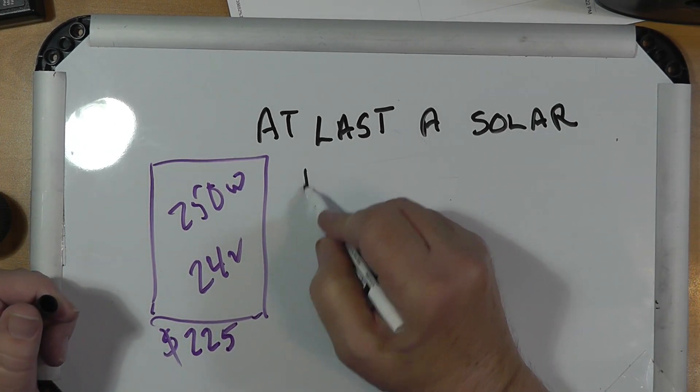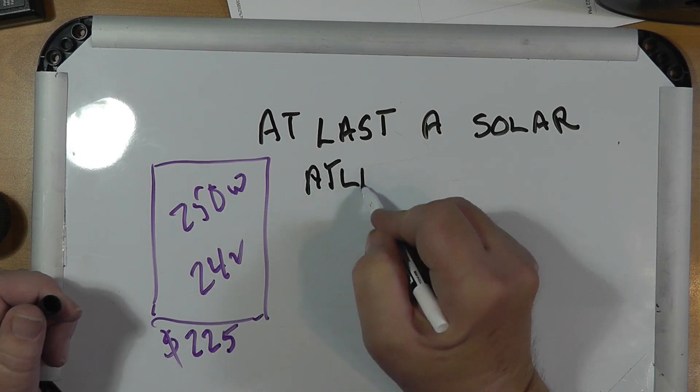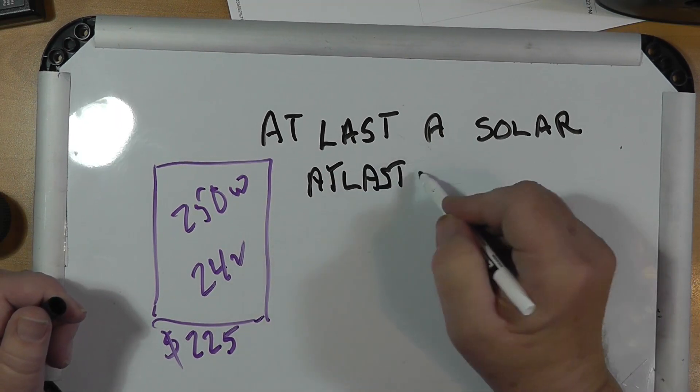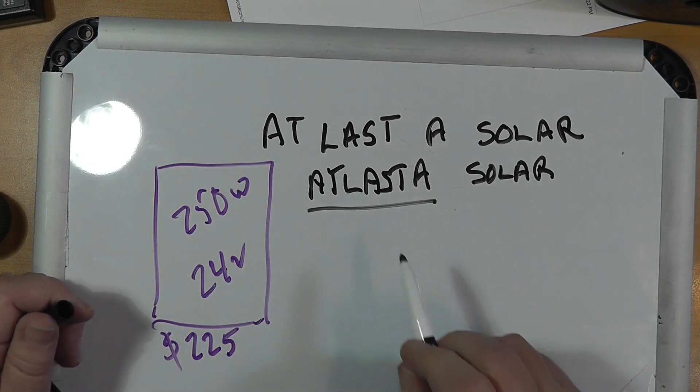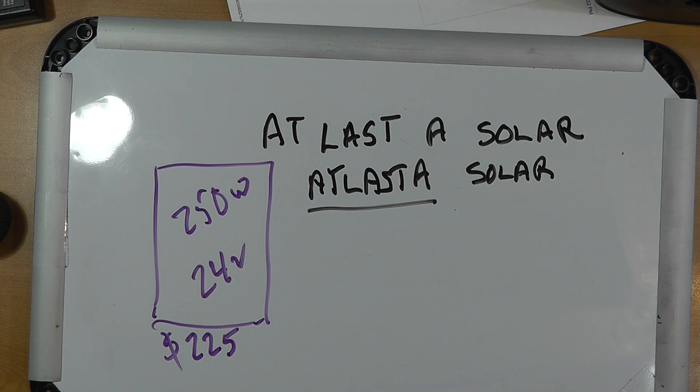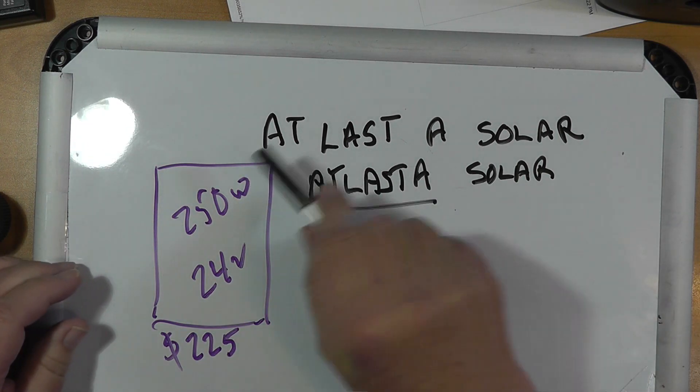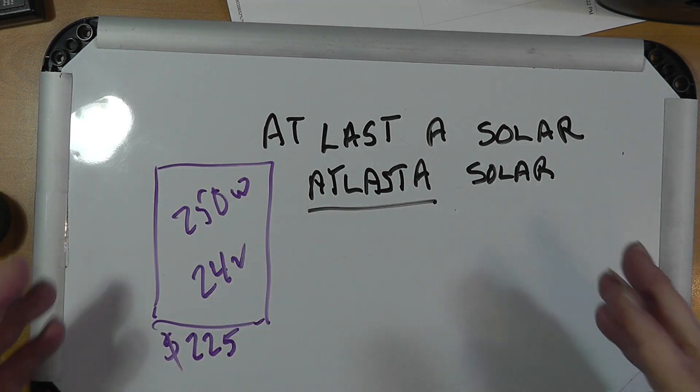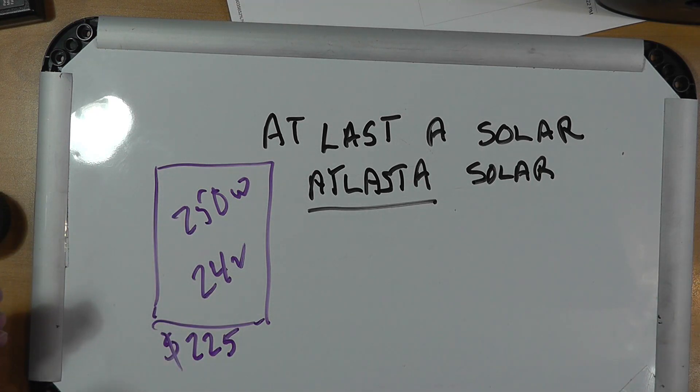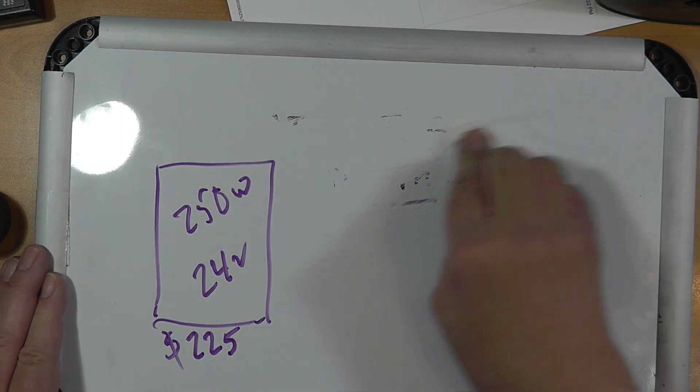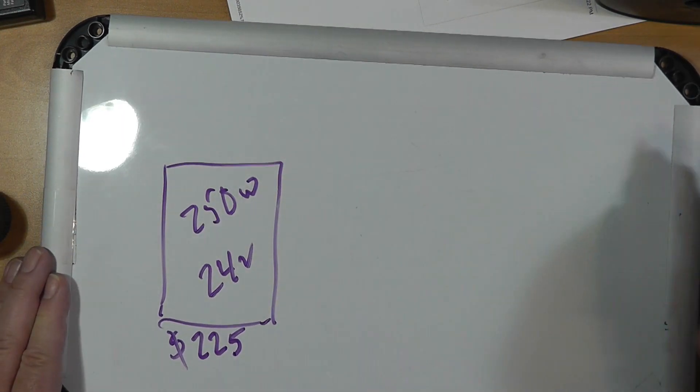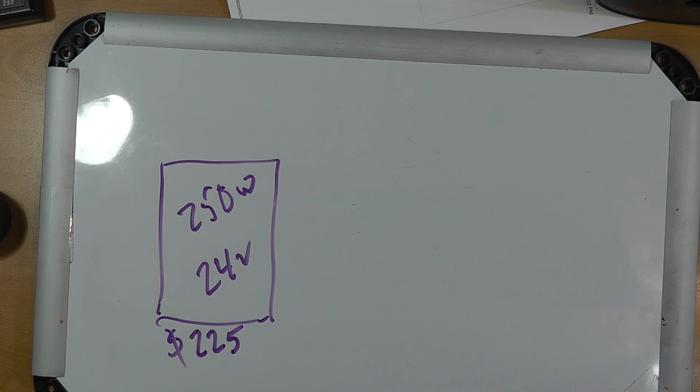It cost, by the way, about $225, so it's less than a dollar a watt. Panels are cheap these days. I got this from a place that does industrial and residential solar in Grand Junction called At Last Solar. If you're looking for solar panels at a low price, don't go to places like RV stores because they're extremely expensive.